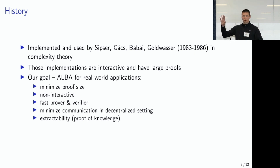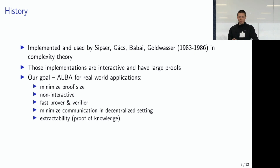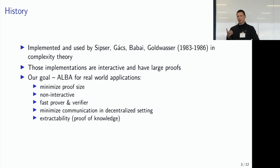We also want fast prover and verifier, and minimal communication in a setting where data elements are spread across multiple distinct provers that need to communicate. Finally, we want extractability — also called proof of knowledge — meaning that if a prover makes valid proofs, then we can extract from it enough data elements. Specifically, there must exist an extract program with access to the prover that outputs those data elements.